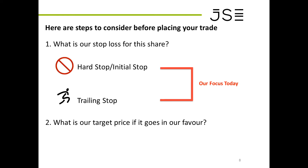Here's something to consider before placing a trade. You need to know where you're going to enter, and as a team you need to decide what your stop loss will be. There are two types: a hard stop — also called an initial stop — and a trailing stop. Our focus today is on the hard or initial stop. You also need to consider having a target price if the trade goes in your favor.